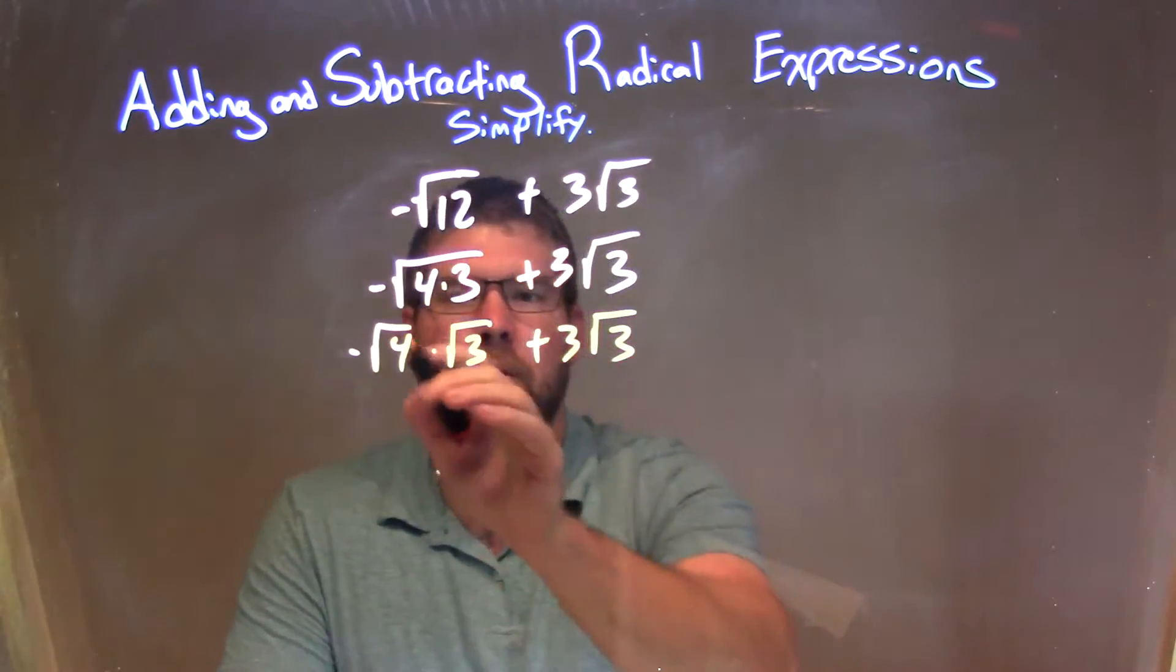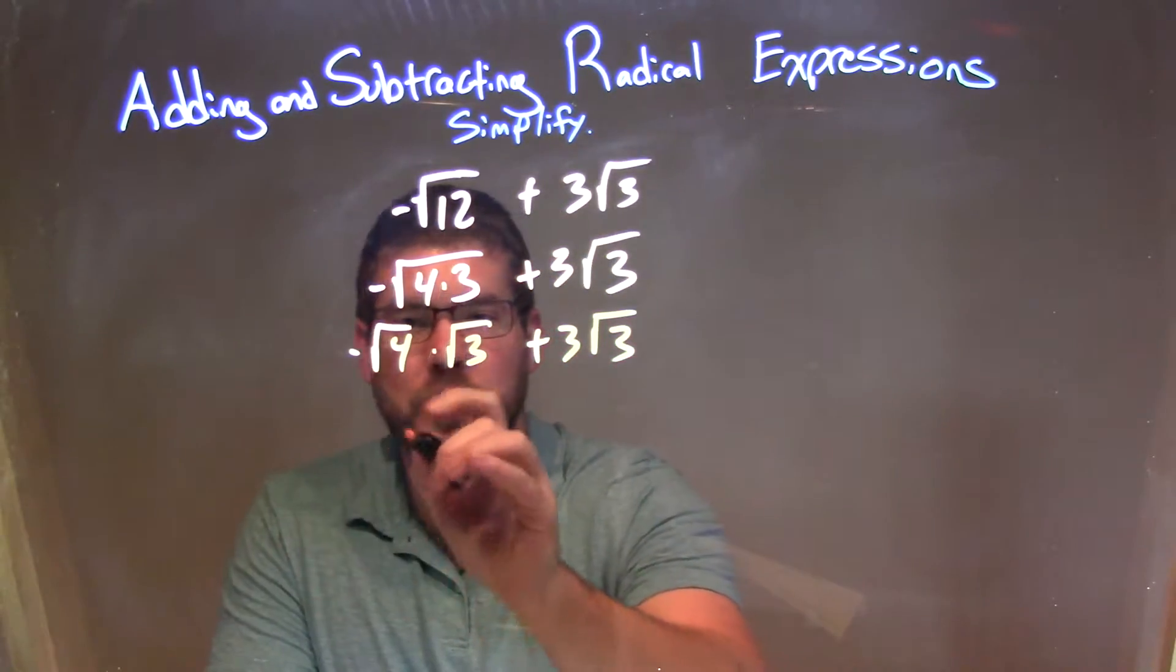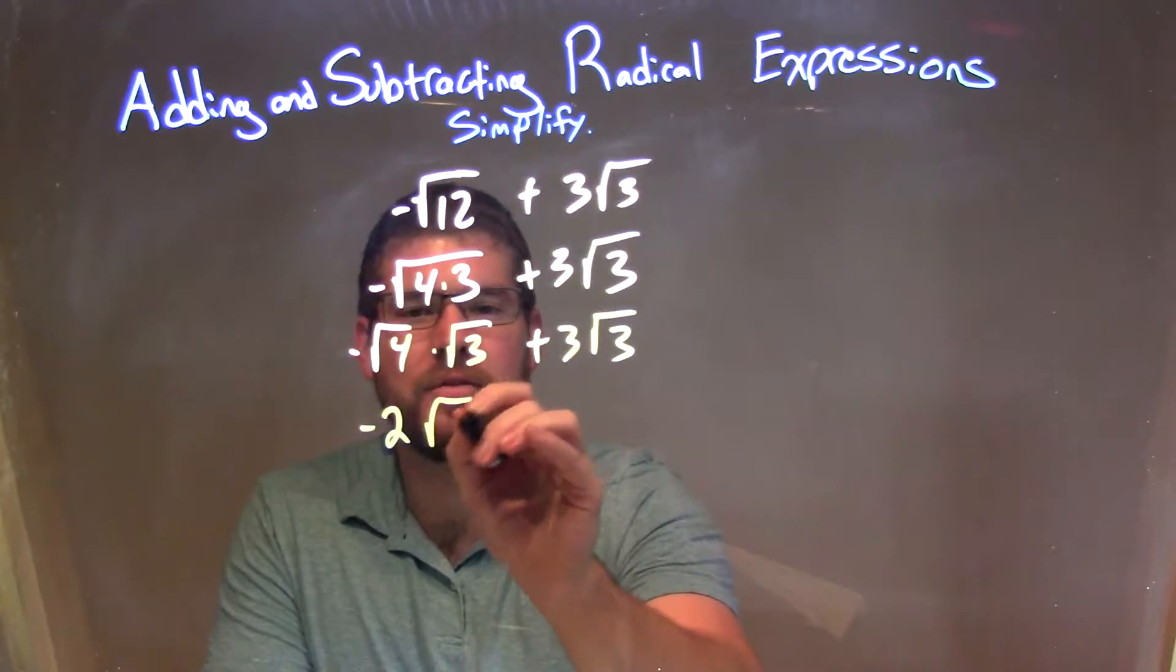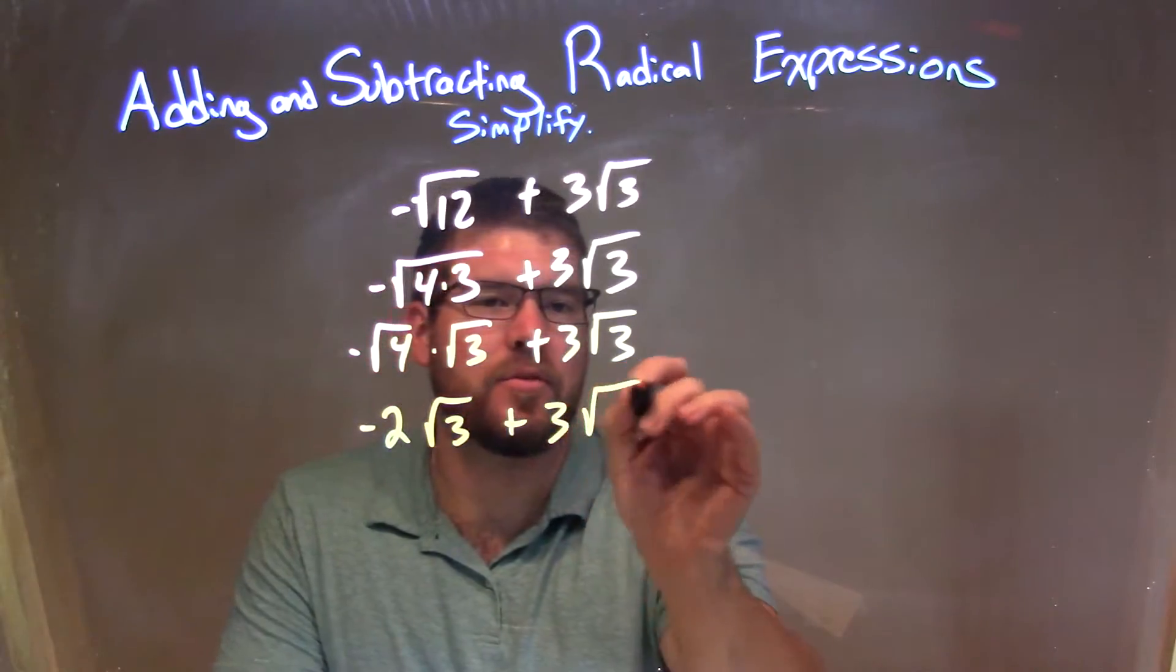That works for us, because square root of 4 is just a 2, so we have negative 2 out here times the square root of 3, plus 3 times the square root of 3.